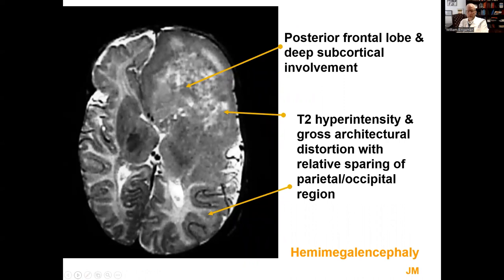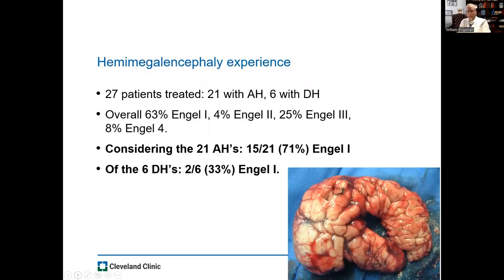For example, in a case of left hemimegalencephaly, you can appreciate how distorted the anatomy of the left hemisphere, especially the left frontoparietal region, is. There are no normal gray-white pathways to guide a disconnected hemispherectomy. The first four or five of my hemispherectomies were patients like this, and I was trained in the functional hemispherectomy technique. I quickly learned that technique is not very effective in treating this type of patient, and we converted to anatomic removal of this abnormal hemisphere, after which our success got better.